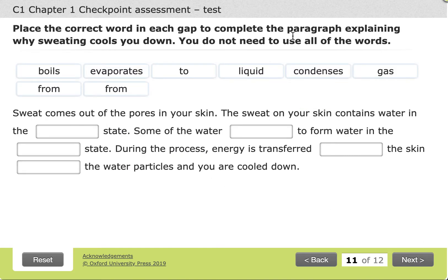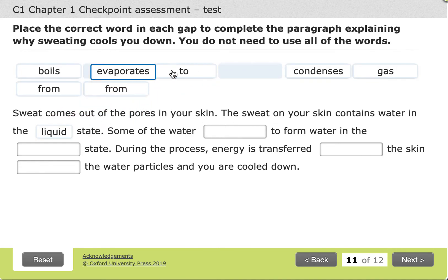Place the correct word in each gap to complete the paragraph. Sweat comes out of the pores in our skin. The sweat on your skin contains water, and we know that sweat is a liquid. What happens to that liquid is some of it evaporates to form water in the gas state.